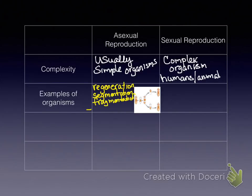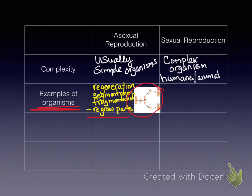Now we're going to talk about examples — the first few are all asexual reproduction. On your paper, you have space under the examples section — you might want to draw this there. Regeneration, segmentation, and fragmentation are all examples of asexual reproduction. What happens is the part gets regrown.